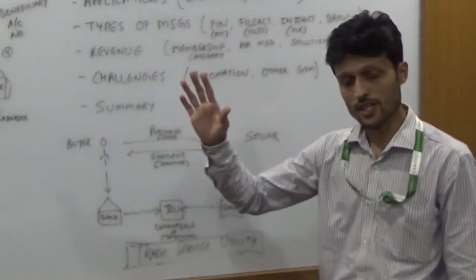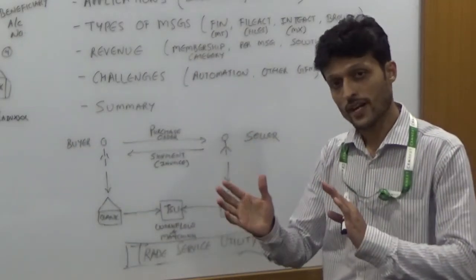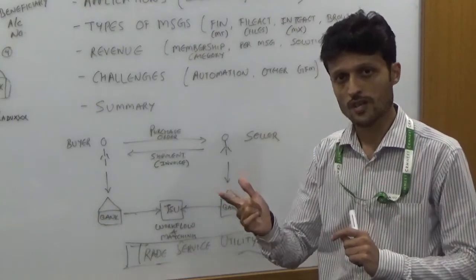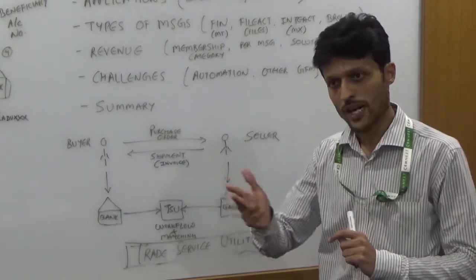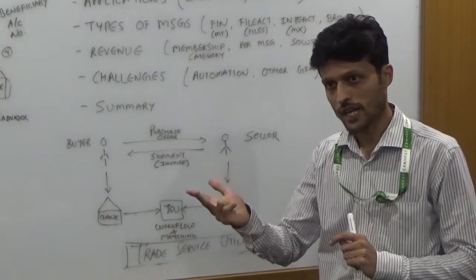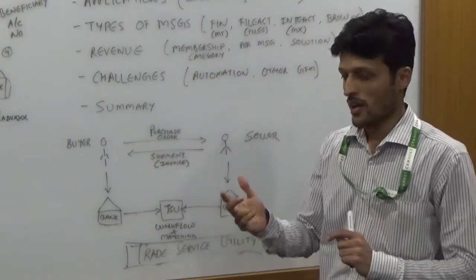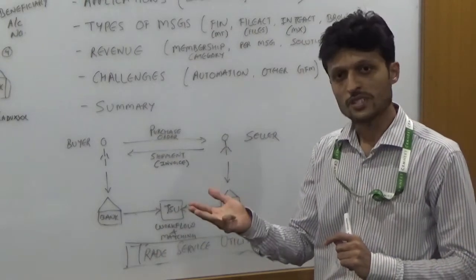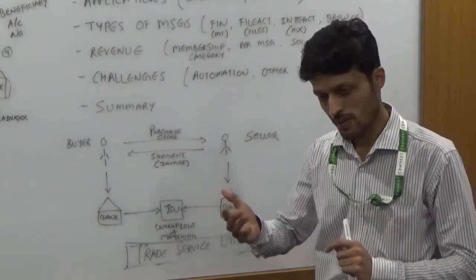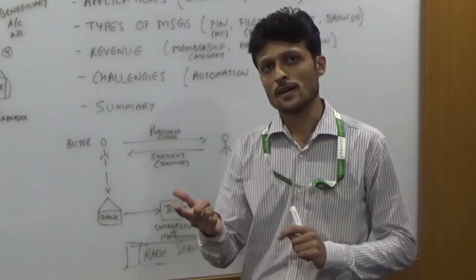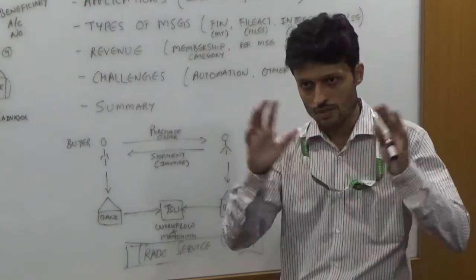There are a number of applications in different spaces. They have compliance related applications like Know Your Customer. They have an AML check for anti-money laundering, crime investigation, and fraudulent customers and organizations. There are a couple of business intelligence applications that they provide to customers like dashboards to view the kind of messages that are flowing to the network for that particular financial institution.